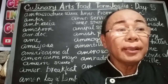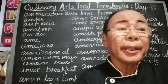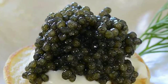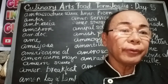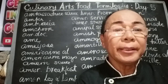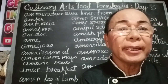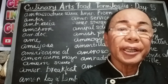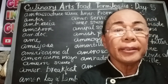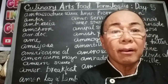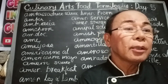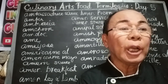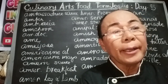American Sturgeon Caviar is a type of roe from sturgeon harvested in the coastal waters of the American Northeast and the Tennessee River. It is generally considered inferior to Russian and Iranian caviar.